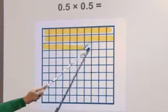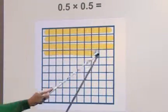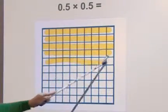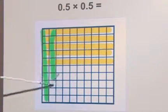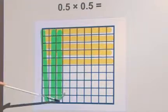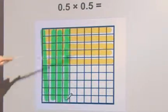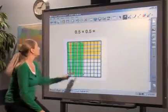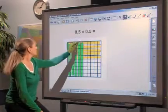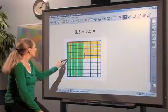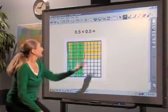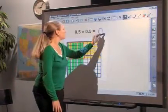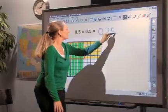Students use 10 by 10 grid paper to shade regions representing the two factors. The intersection of the two regions represents the product. 5 tenths times 5 tenths is 25 hundredths.